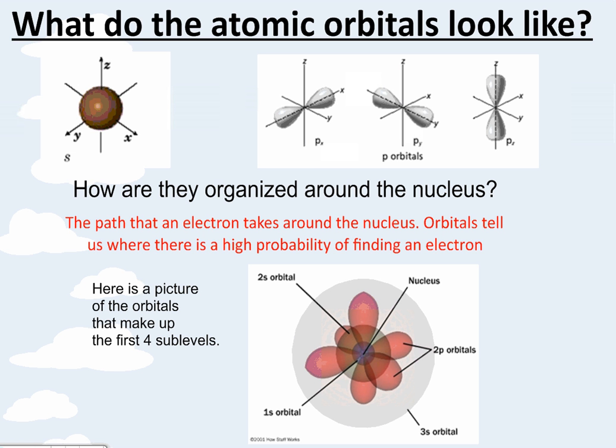So it says, how are they organized around the nucleus? These atomic orbitals, they literally are the path the electron takes around the nucleus. They tell us where there's a high probability of finding an electron. And at the bottom, there's an example of the orbitals that make up the first four sublevels. So you can kind of see the S is in the middle. Then on top of it, you've got these figure eights. So they just kind of build upon each other, making up this electron cloud.